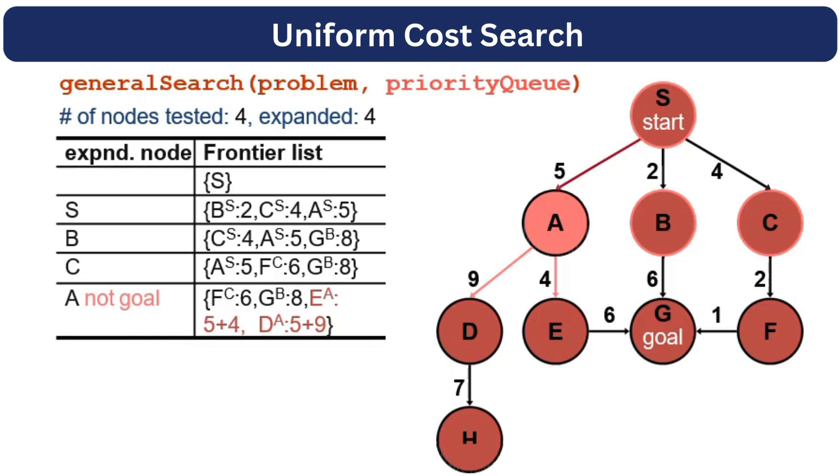So the next node with the least cost is A node. We will dequeue it, check if it is a goal node or not. And then we will explore its neighbors. Neighbors are D and E. E has the cost 5 plus 4, 9. And D has the cost 5 plus 9, 14.